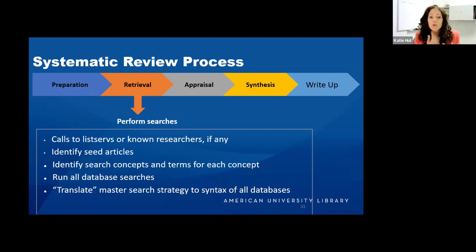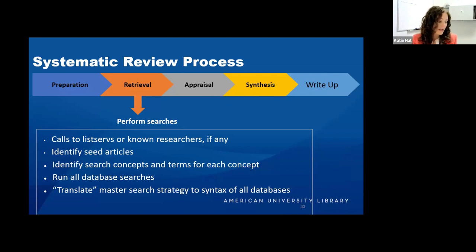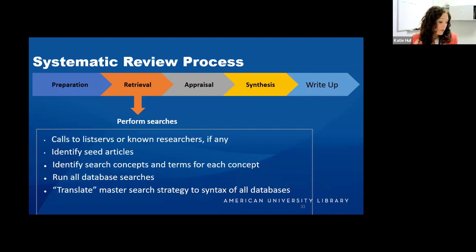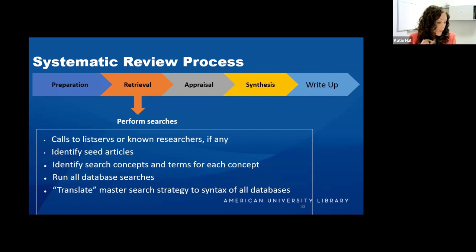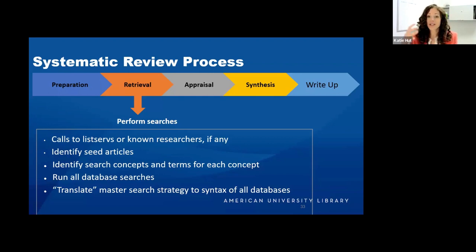Other researchers can help in a number of ways, including identifying seed articles — also called gold standard articles or sentinel articles. These are the articles you identified in your preliminary searches that may have led you down this research path in the first place. You want to use seed articles to gather terminology, keywords, and search terms, and to check that these articles are included in your search results as a test that your search is comprehensive enough.